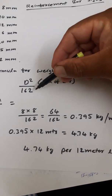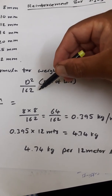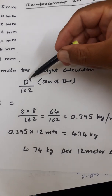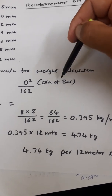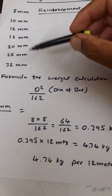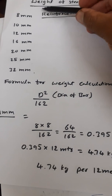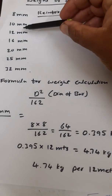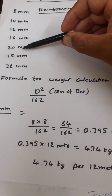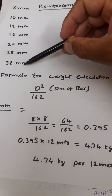The formula for weight calculation of reinforcement bars is D squared divided by 162. Here, D is the diameter of the bar — it will be 8mm, 10mm, 12mm, 16mm, 20mm, 25mm, or 32mm respectively.